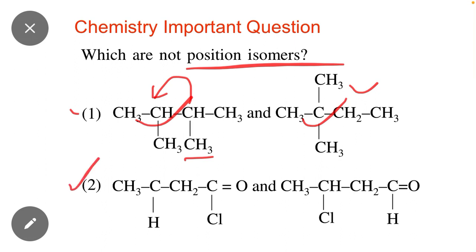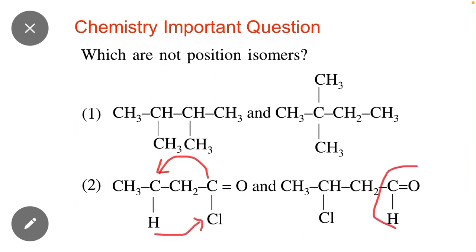If we check option 2. Here you can see that this part of this compound is acid halide part. When Cl, I mean chloro, changed its position from this carbon to this carbon. From this carbon to this carbon and hydrogen changed its position to this carbon. Then a new functional group is formed which is an aldehyde part.